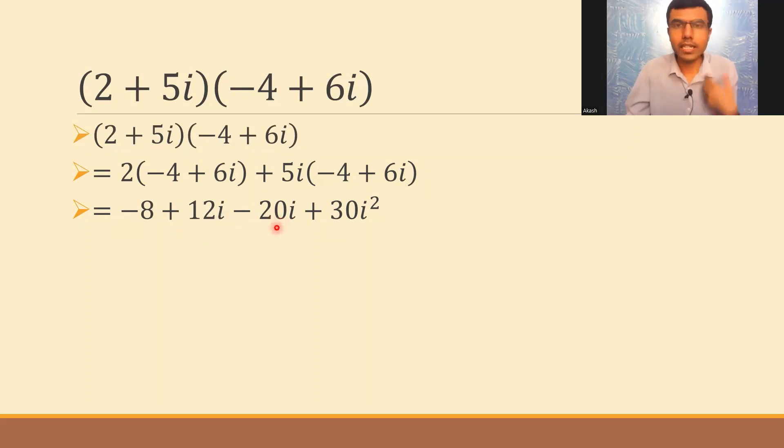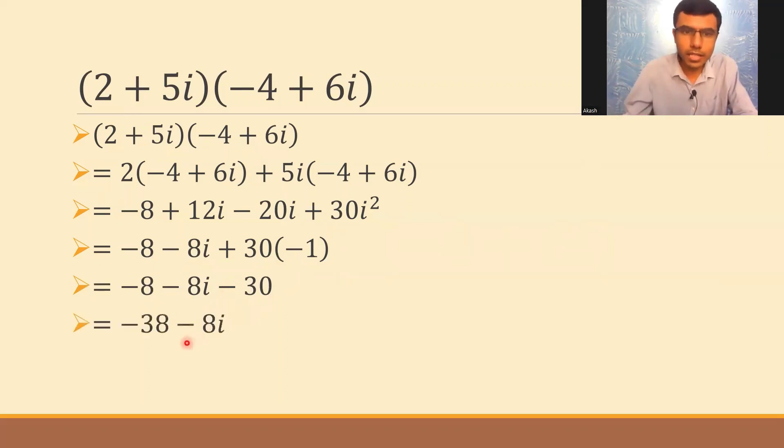12i minus 20i is nothing but minus 8i. So I have minus 8 minus 8i plus 30 into minus 1. Again just continue simplifying. So this would be minus 8 minus 8i minus 30. Minus 8 minus 30 is minus 38. So minus 38 minus 8i.